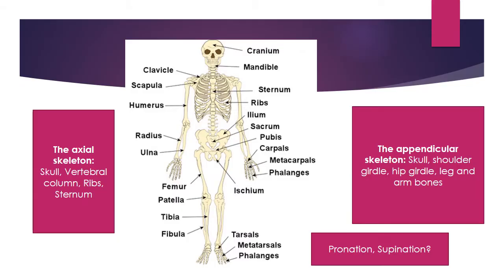Here we've got a diagram of the human skeleton. To the left you can see something referring to the axial skeleton. This includes bones which make up the core of the human body — the skull, vertebral column, the ribs and the sternum.